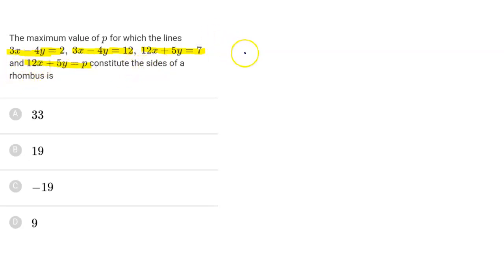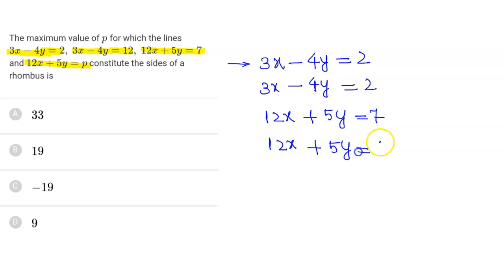What is the question asking? We have four line equations: 3x - 4y = 2, 3x - 4y = 12, 12x + 5y = 7, and 12x + 5y = p.